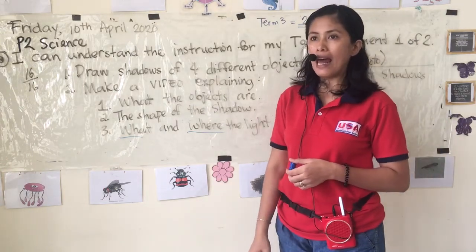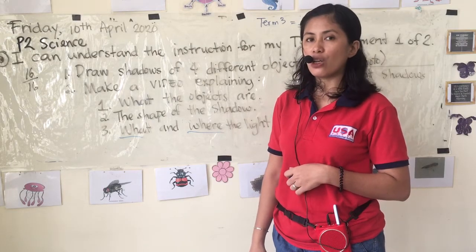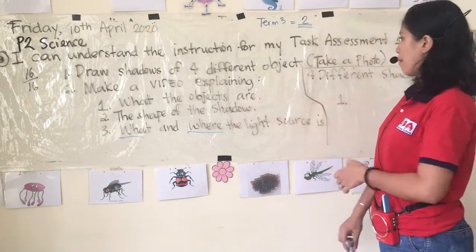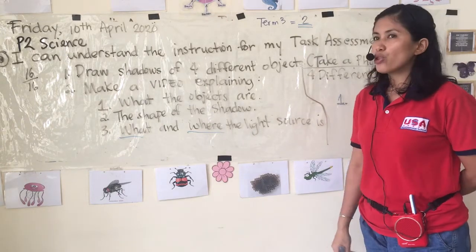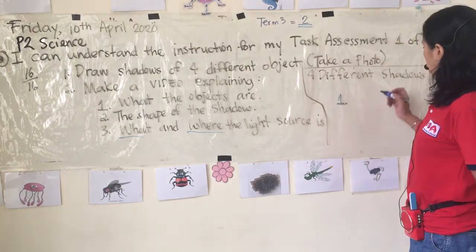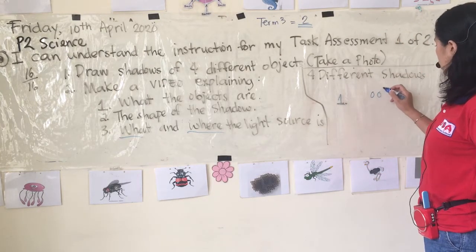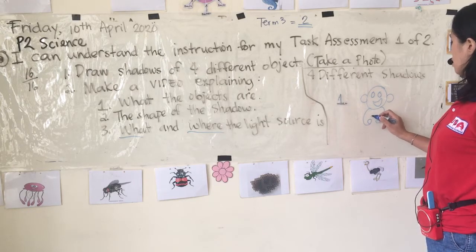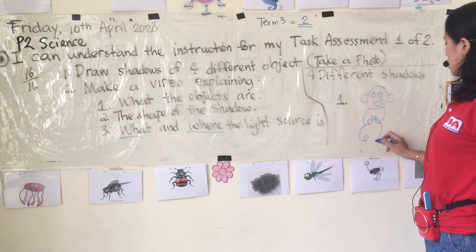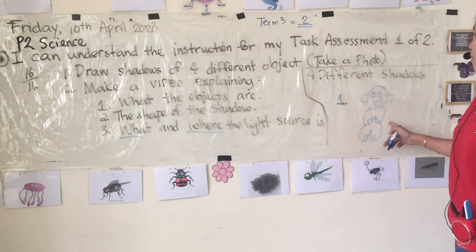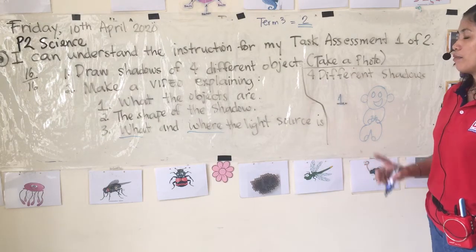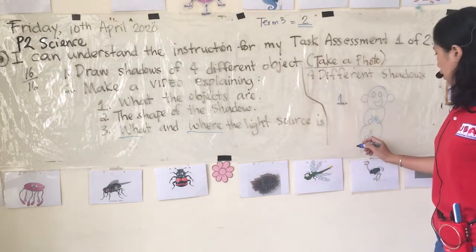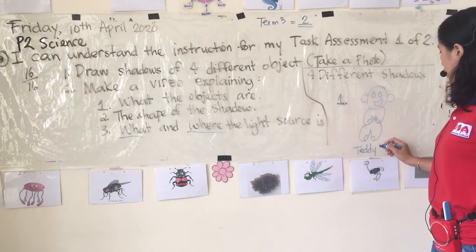Yesterday I showed you that the shadow will change according to where the source of light is and its position. For example, I'm going to draw a teddy bear — small circle, small circle, big circle. So this is my first object, for example. What the object is: this one is a teddy bear.